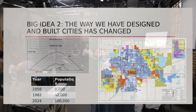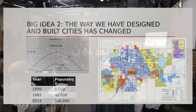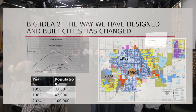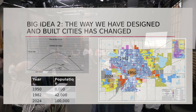Big idea number two: the way that we have designed and built cities has changed. I pulled a figure from the book that shows on the y-axis the value of land and on the x-axis the distance from the center of a city. In the traditional development pattern, the center of the city is super valuable because it's close to everything. People add on to the edge of the city incrementally — maybe someone starts a general store, and if it's profitable they build a better building. That incremental process results in increasing value at the center, and the city grows out from there.